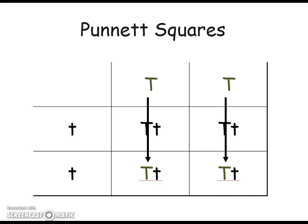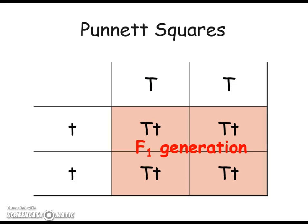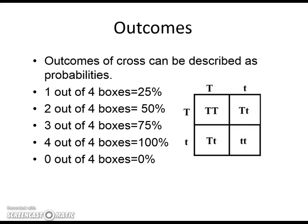You drag the alleles over and drop them like a multiplication table. If there's one capital and one lowercase in a box, make sure the dominant one is listed first. The offspring go in the middle of the Punnett square. Think of outcomes in terms of percentages: if one box is filled in that's a 25% chance; if two out of four boxes match, that's 50%. You can also have outcomes of 100% or 0%.